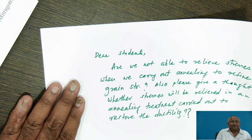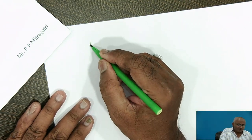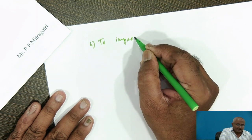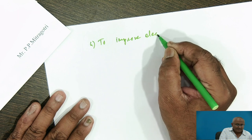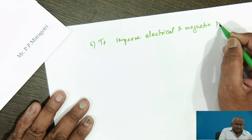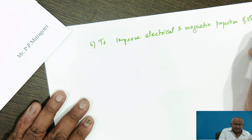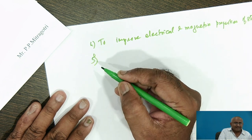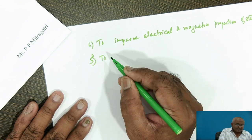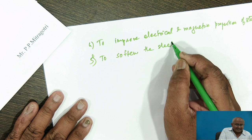The next purpose of annealing is to improve the electrical and magnetic properties of steel. This stage is called recovery. Annealing is fundamentally a softening treatment, and another purpose is to soften the steel.